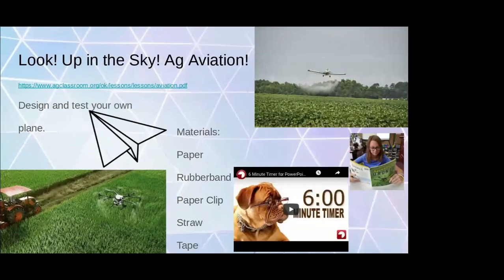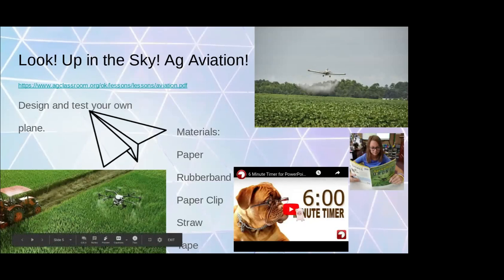Now we're going to take a little break and let you do a little STEM before we look at this lesson. This is the way I present it to my kids. Ada is super big in aviation right now, and I wanted to link it to agriculture because that's my favorite part of teaching. I give the kids very simple supplies and put them out and they pick. Materials you can use — paper, any kind, cardstock, cardboard, a rubber band, paper clip, straw, and tape. I tell them they need to build me a plane that we're going to test. I don't give them any further instructions. They can use all of the materials or as few as they need. I'll give you about six minutes to build.